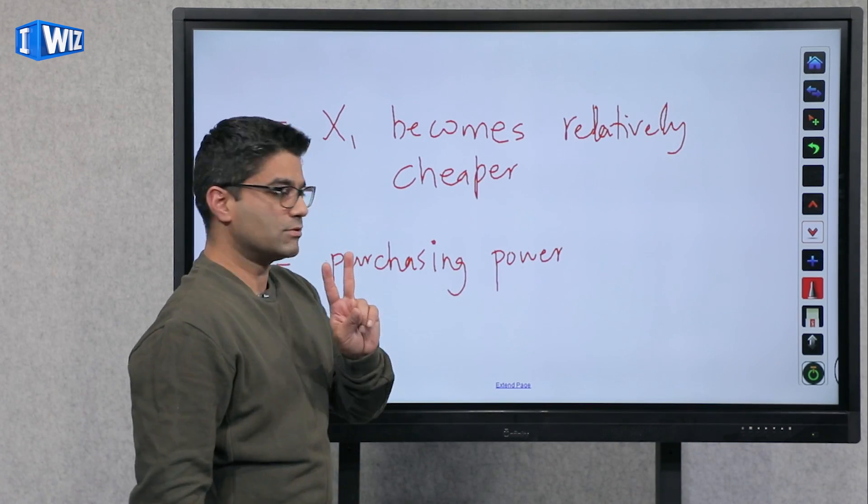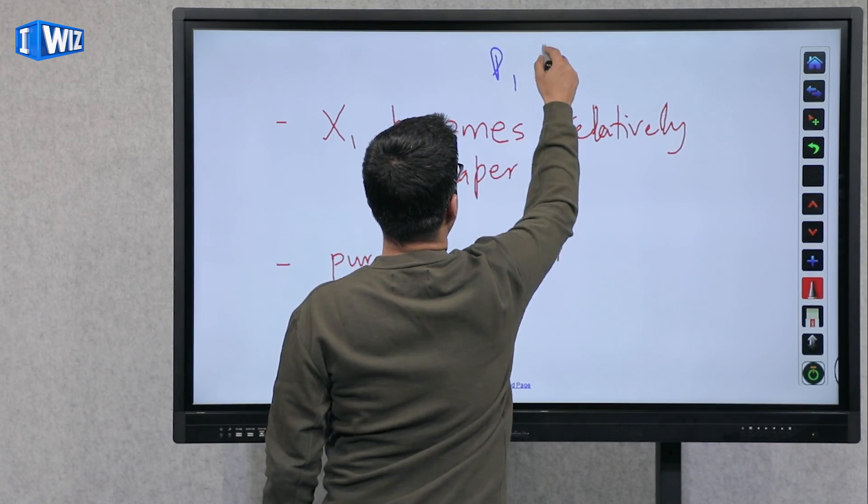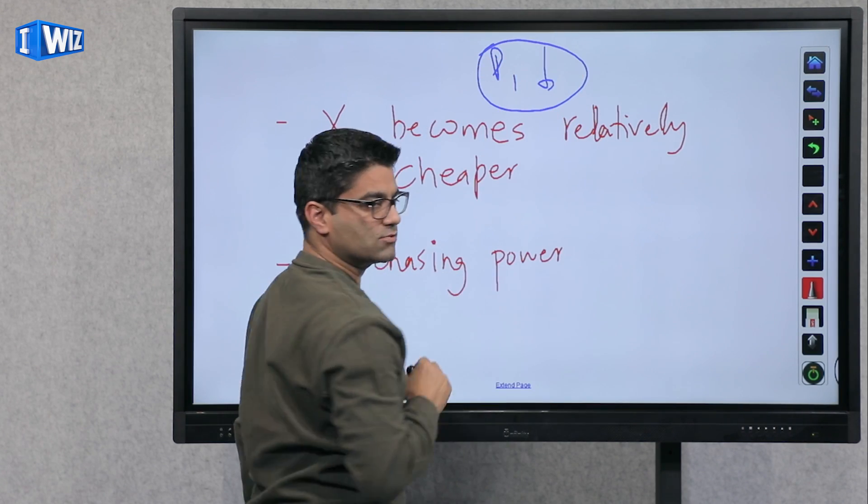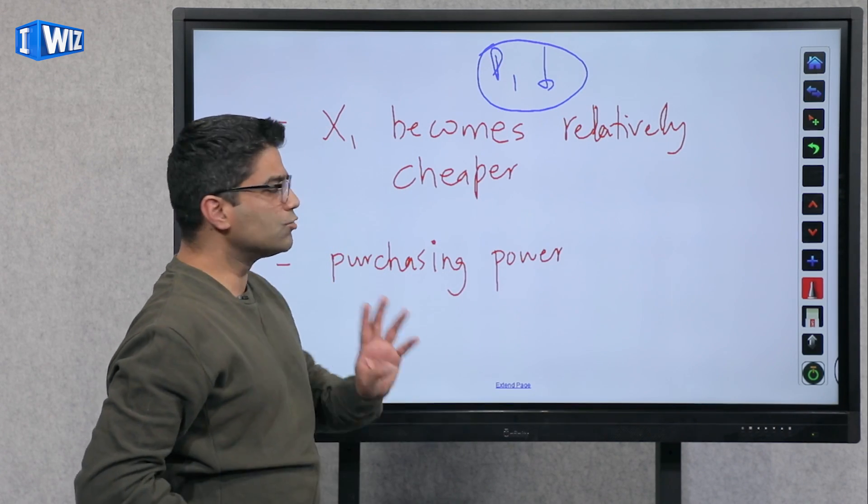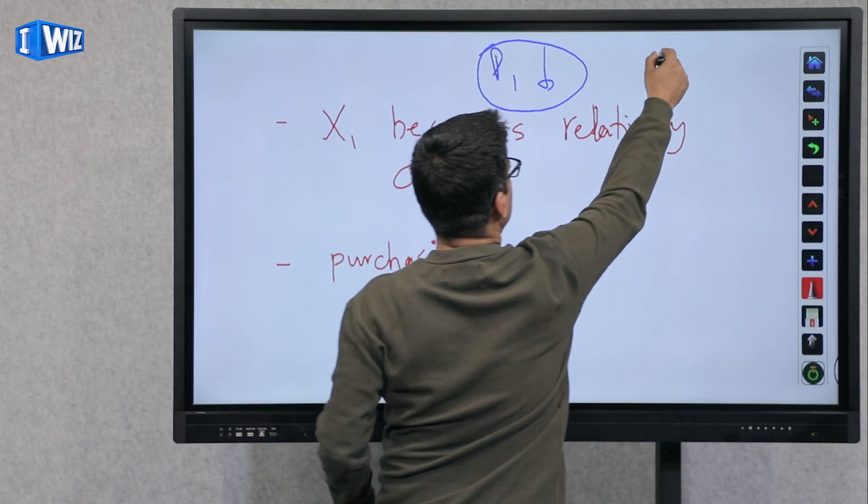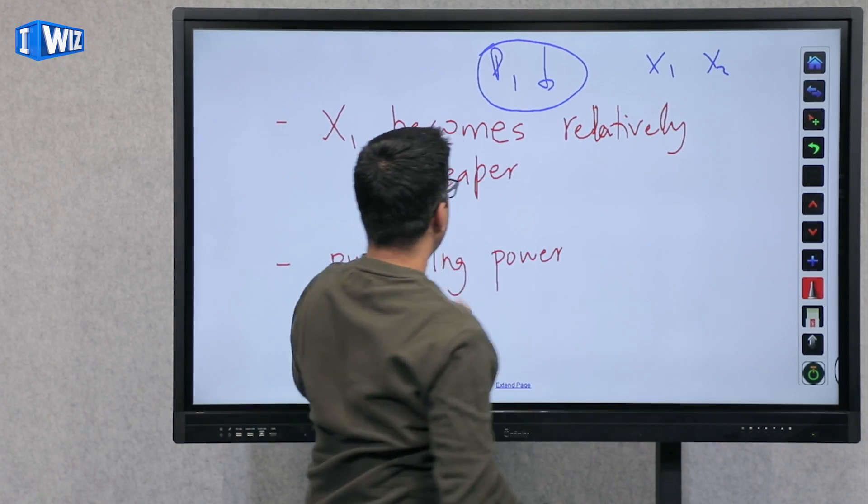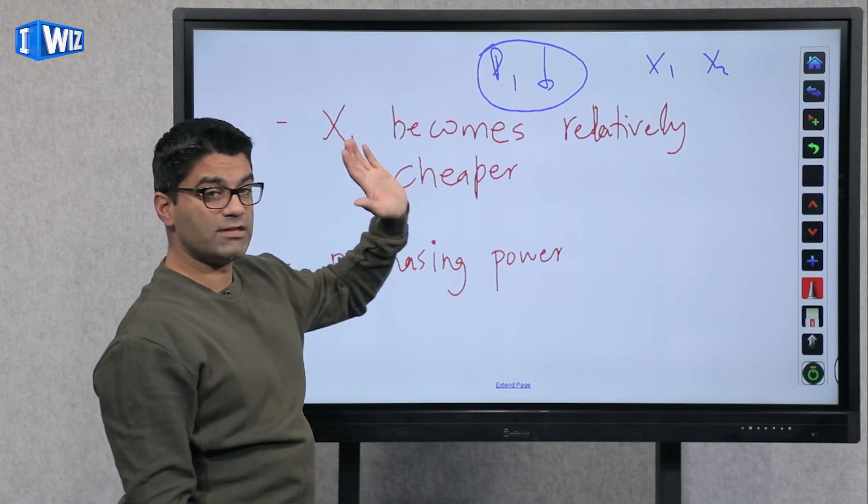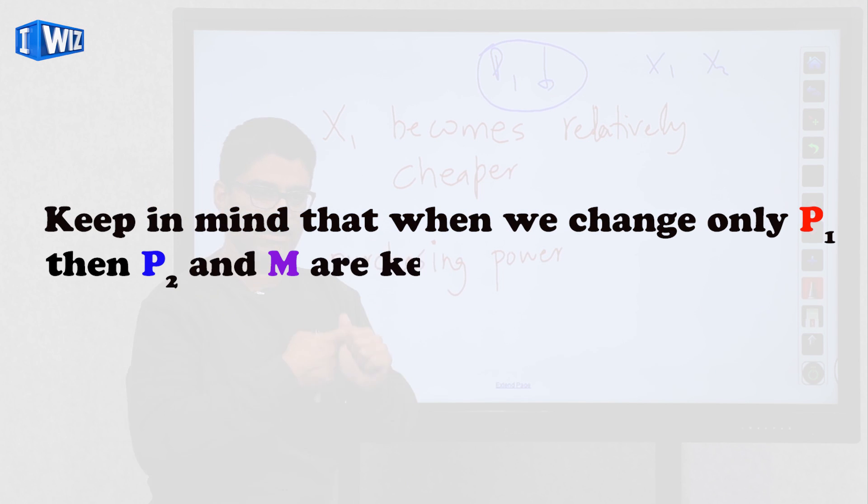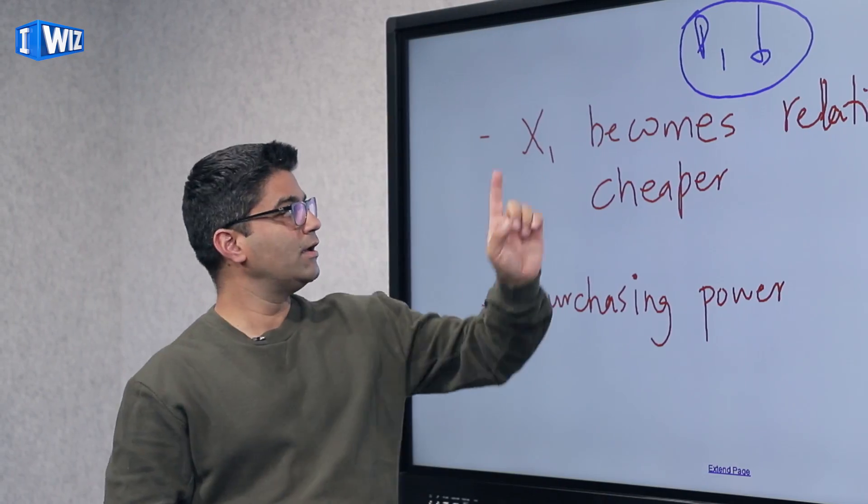So two things happen. We are saying the price of good one goes down, and this is a little tricky, so pay a little extra attention to this. Two things happen, again, we are comparing, we have two goods, X1 and X2. Good one, so everything else is kept constant. Our income, the price of good two, our tastes and preferences, everything else is kept constant, and the only thing that's changing is price of good one.